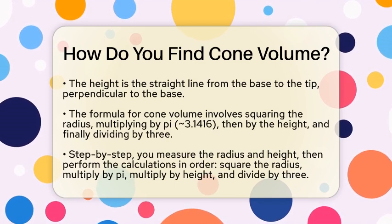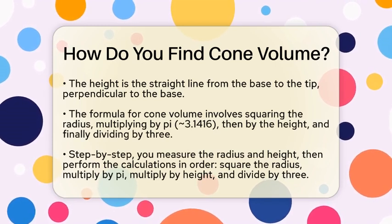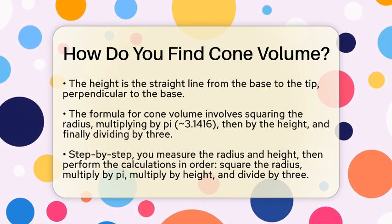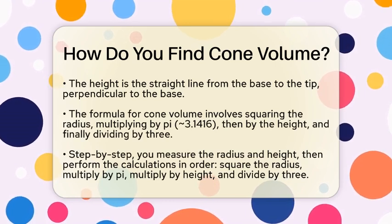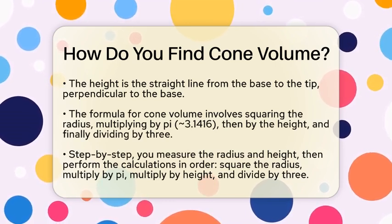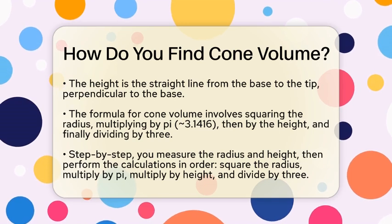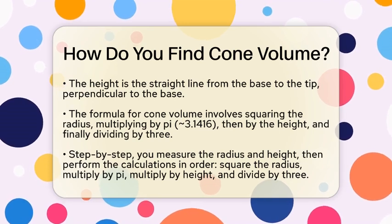Let's break it down step by step. First, measure the radius of the base. If you only know the diameter, which is the full width across the circle, just divide it by 2 to get the radius. Next, measure the height from the base to the tip of the cone.